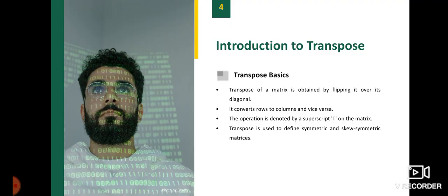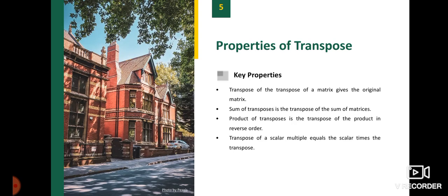Now, see the transpose. The transpose of a matrix is obtained by flipping it over its diagonal. It converts rows to columns and vice versa. The transpose is used to define symmetric and skew-symmetric matrices.